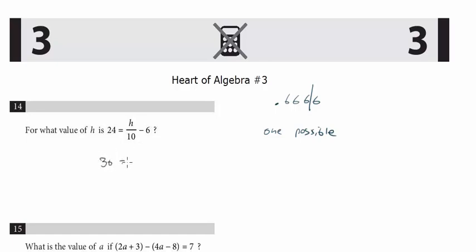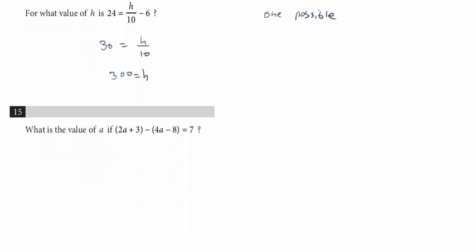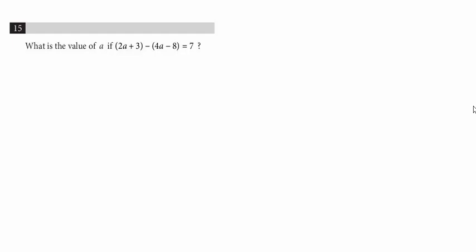We're going to multiply both sides by 10, so we isolate h. So h is going to be 10 times 30, and it's 300, and that's it. All right, let's look at one more algebra question in the grid, and it's question 15.